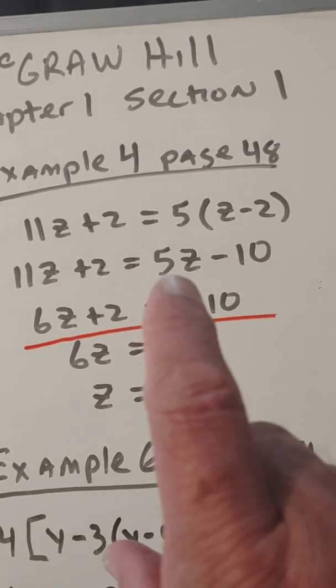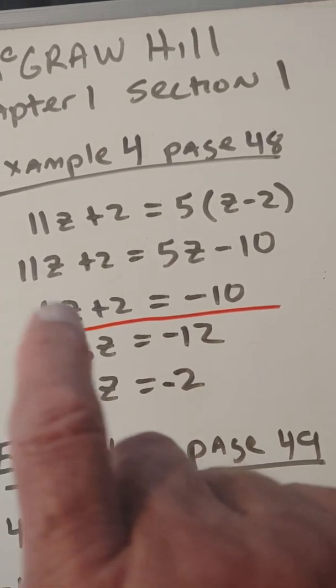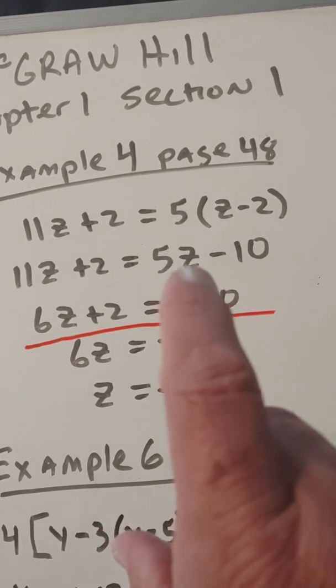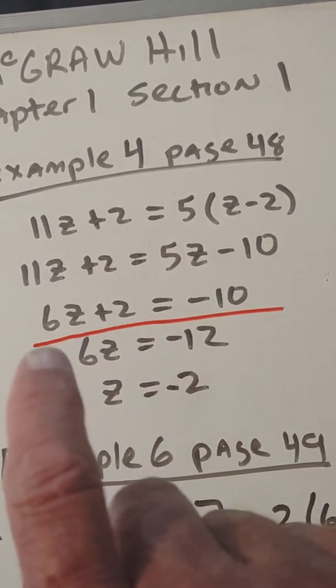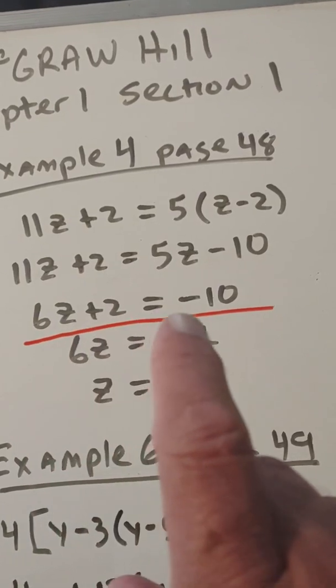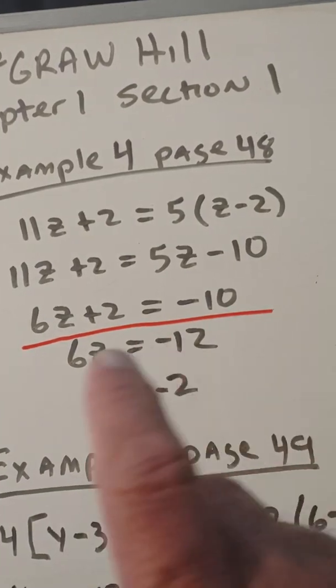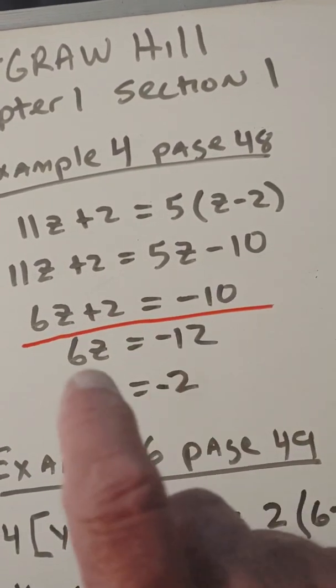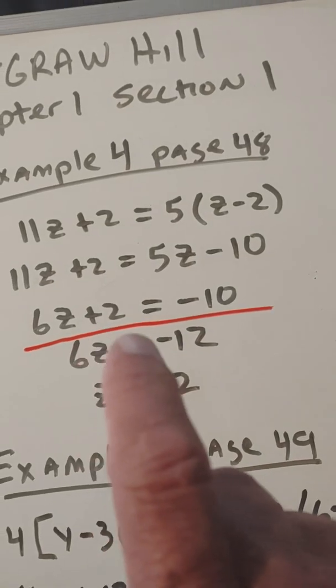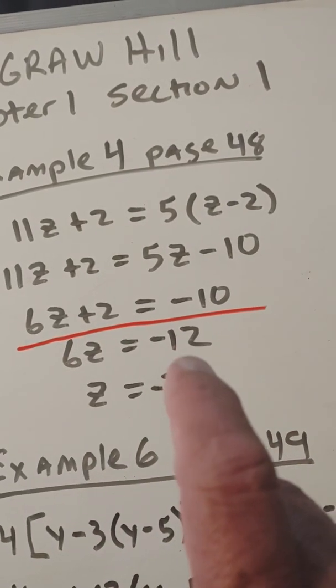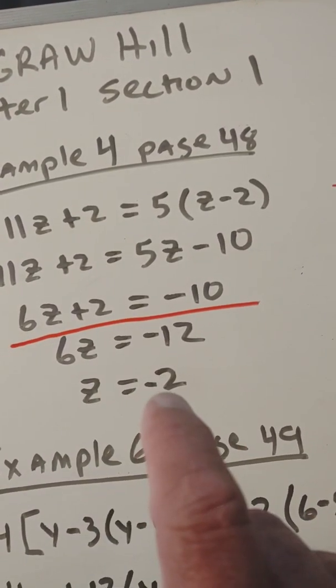We're going to get it in two-step form, so what we're going to do is subtract the variable number on the right over to the left. Now, if this had been negative, we would have had to add it over. So when we go 11z minus 5z, we get 6z plus 2 equals negative 10. Now, I've underlined this so you can recognize two-step form. A two-step form, subtract the 2, divide by the 6, we get negative 2. So when I subtract the 2, negative 10 minus 2 is negative 12, divide by 6, negative 12 divided by 6 is negative 2.